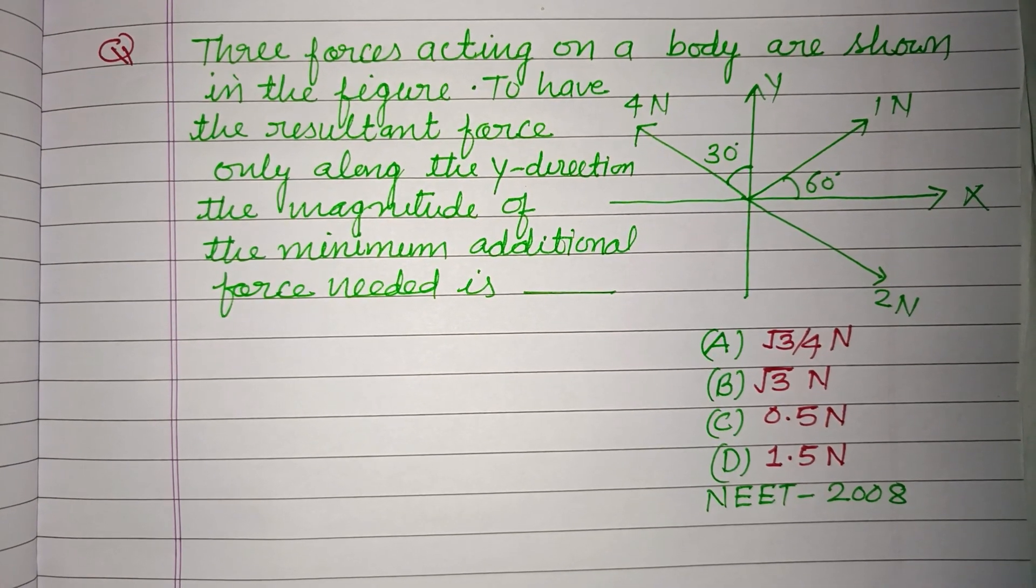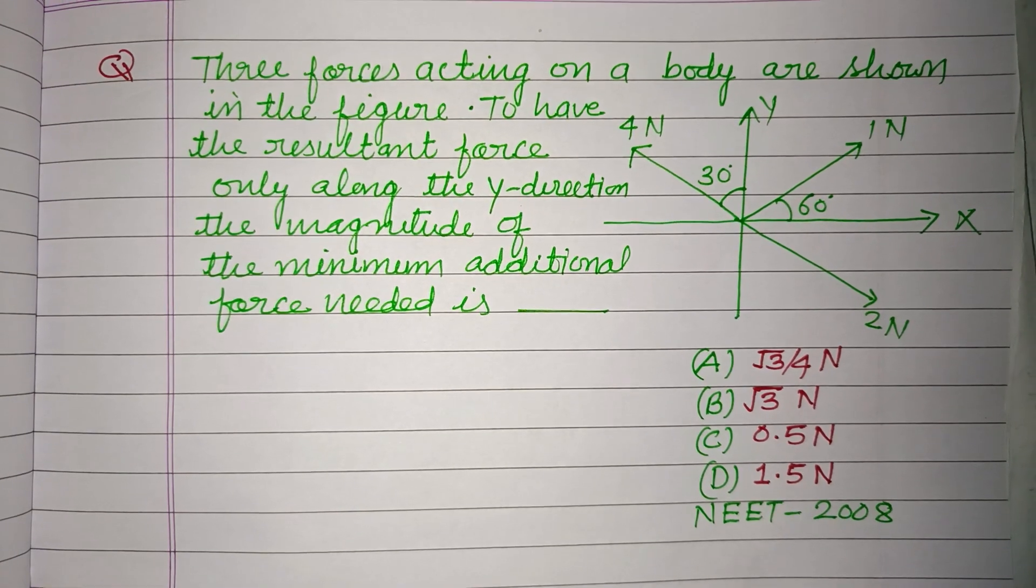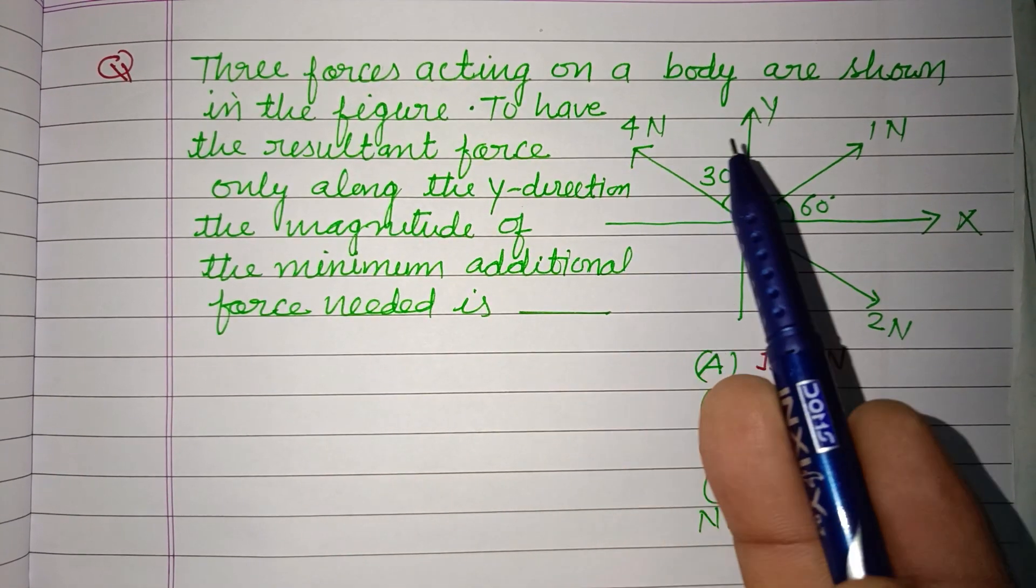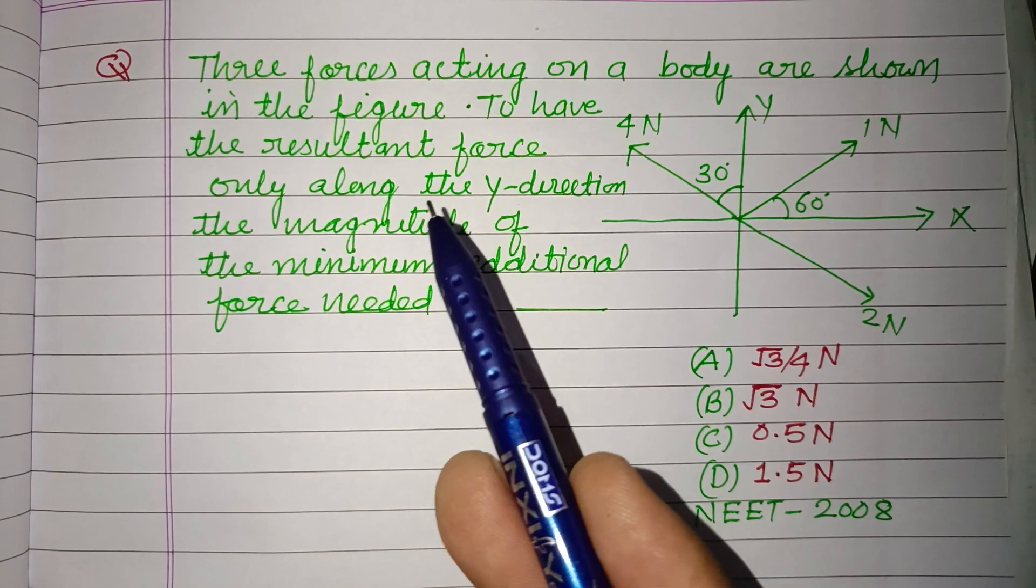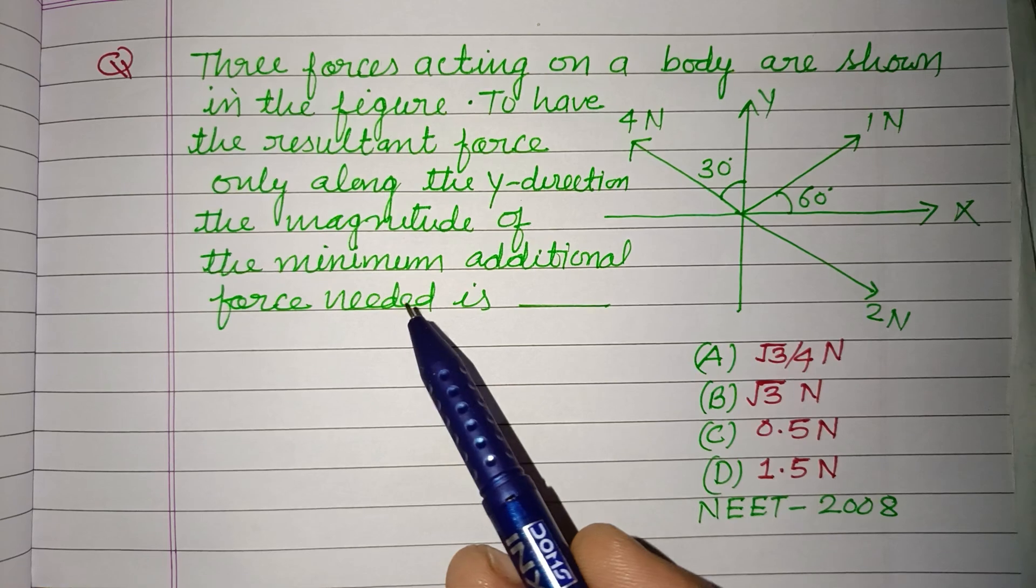Hello viewers, warm welcome to this YouTube channel. This is a question from NEET 2008. Three forces acting on a body are shown in the figure. To have the resultant force only along the y-direction, the magnitude of the minimum additional force needed is: